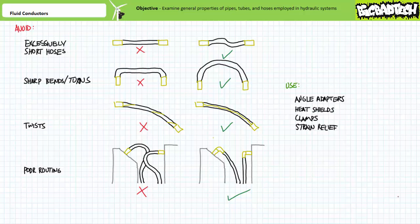Similarly, bend radius is measured using the outside of the tube rather than the center line. Additionally, it is a recommended practice to avoid excessively short hoses.